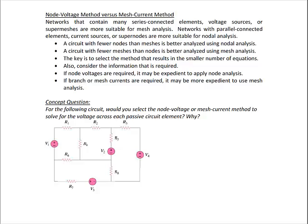If you have mostly parallel-connected elements, current sources, or something like a single node pair, you would probably do nodal analysis or the node voltage method. If a circuit has fewer nodes than meshes, it's probably better to do the node voltage method. Fewer meshes than nodes, it's probably better to do the mesh current method, because you want to select the method that reduces the number of equations and therefore the chances of making a mistake.